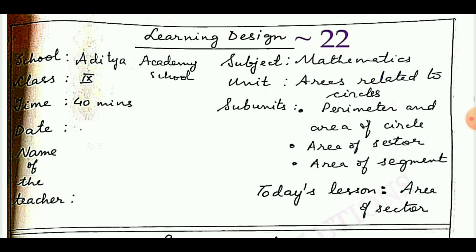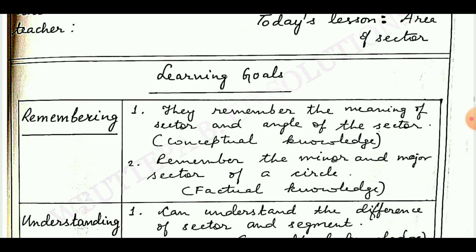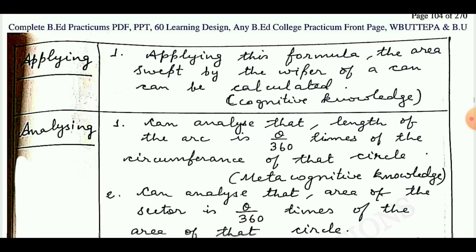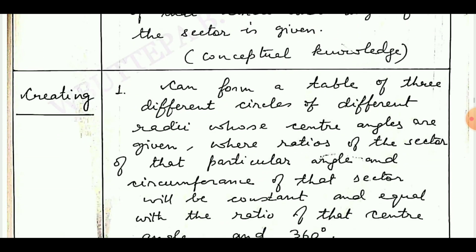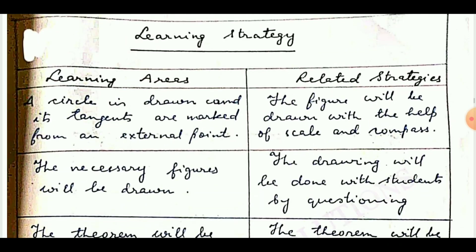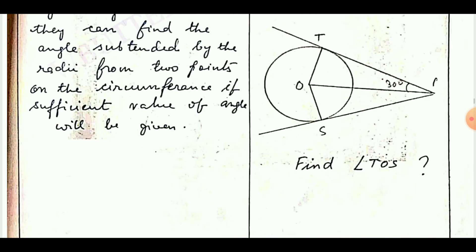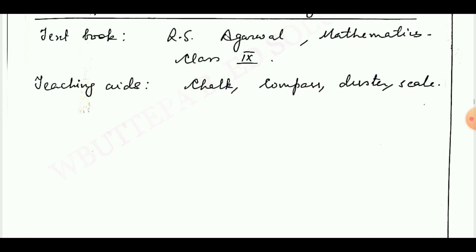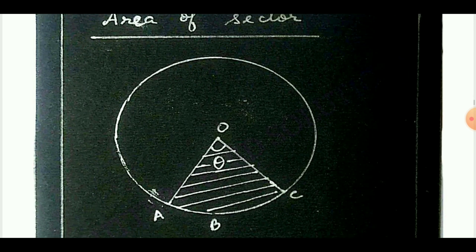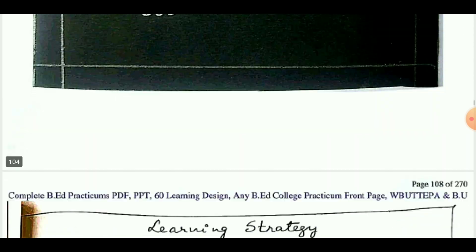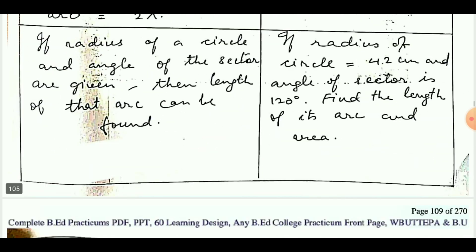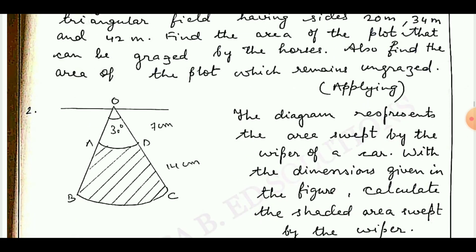Learning design number 22. Learning objectives are remembering, understanding, applying, analyzing, evaluating, and creating. Next: learning strategy, analyze learner context, develop and select learning materials — board work is shown — learning strategy, and design for evaluation.